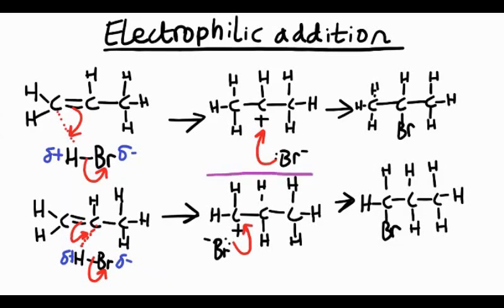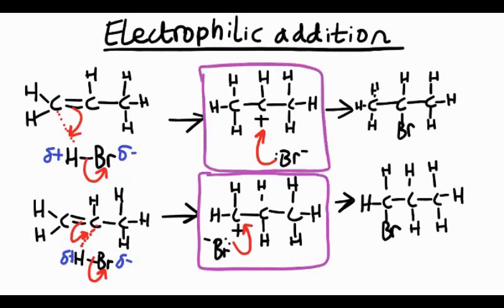We need to work out which one is primary, secondary, or tertiary, and the way to do that is to look at the carbon that's got the positive charge on it. In that bottom one, the positive charge is on the first carbon. On the top one, the positive charge is in the middle.